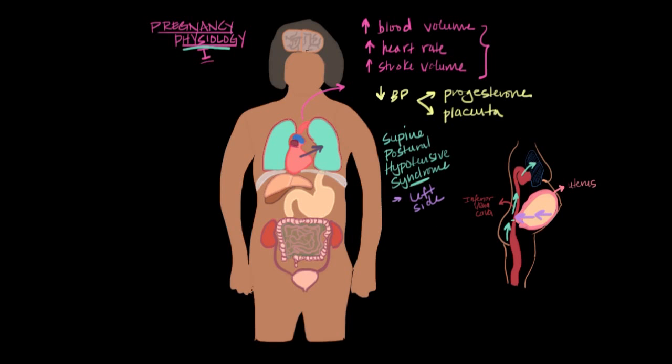Now I know that's a lot of information, but the cardiovascular system undergoes lots of changes to support the pregnancy. So now let's move on to what changes occur in the respiratory system.